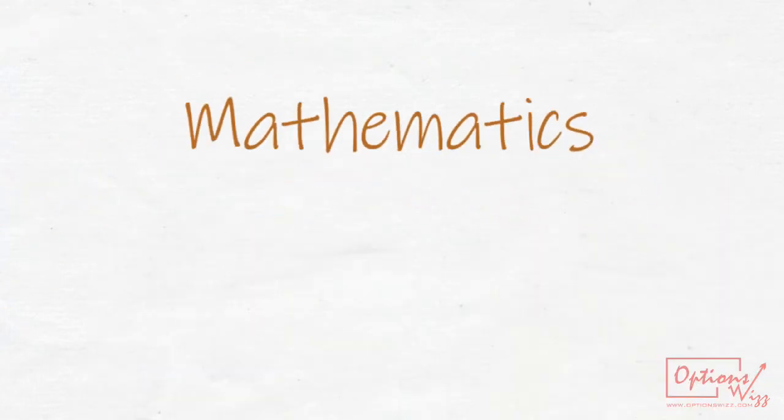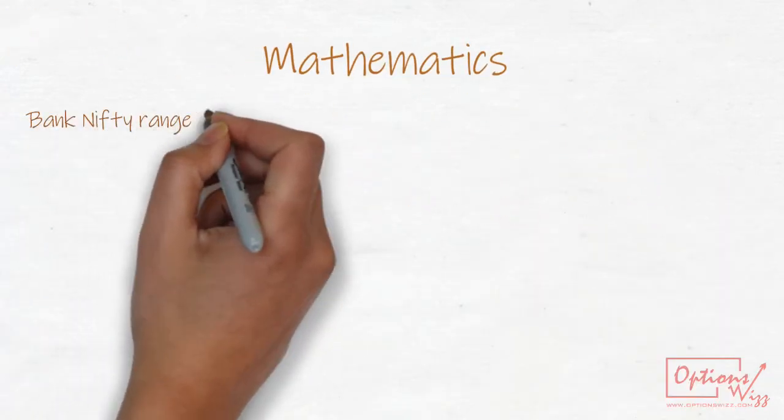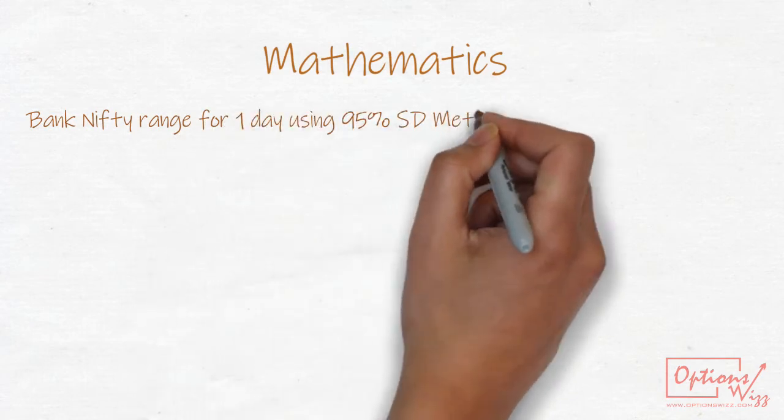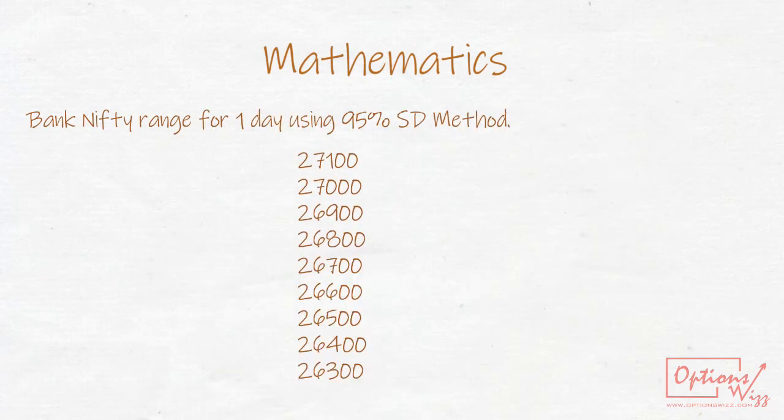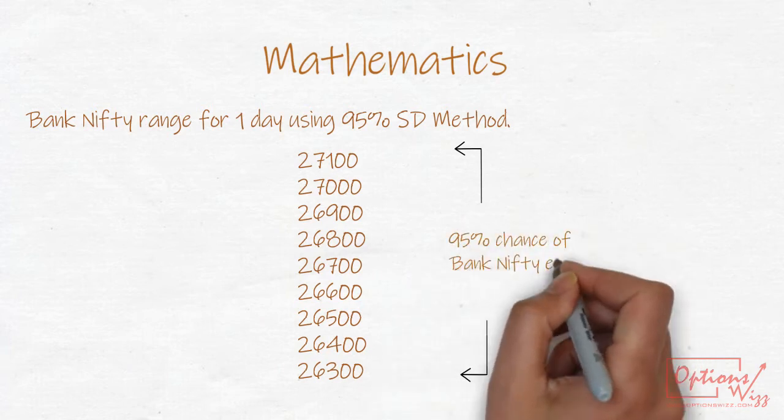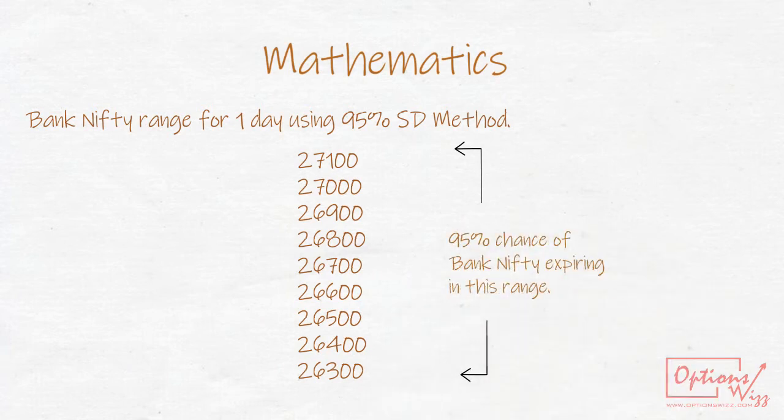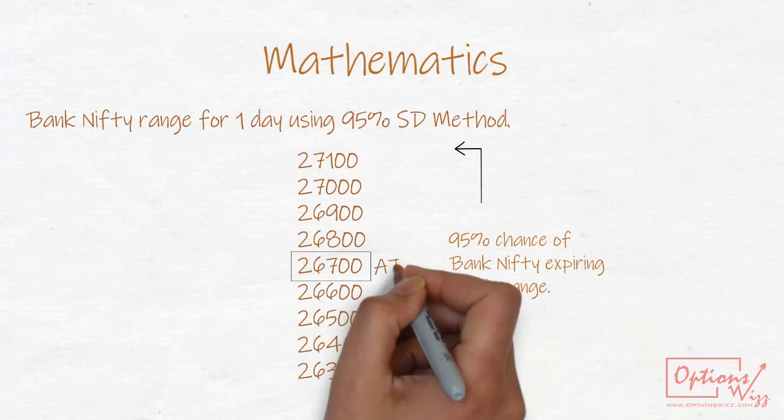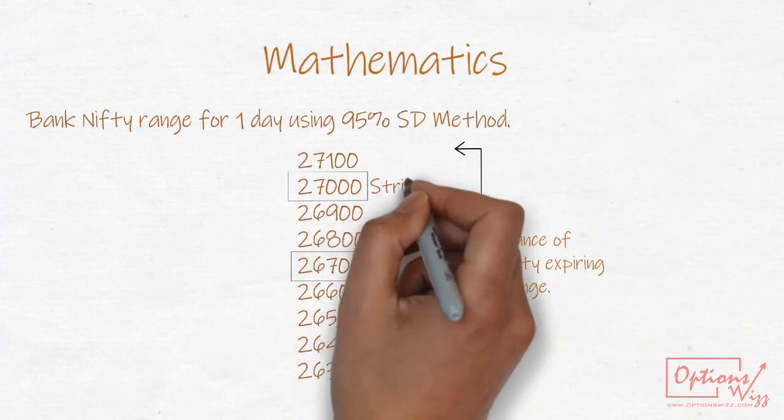Time for some mathematics. Using 95% standard deviation method, we got a range from 26,300 to 27,100 in which Bank Nifty is likely to expire. Now there are 95% chances that Bank Nifty will expire within this range. Let us analyze the outcome of this trade within this range.